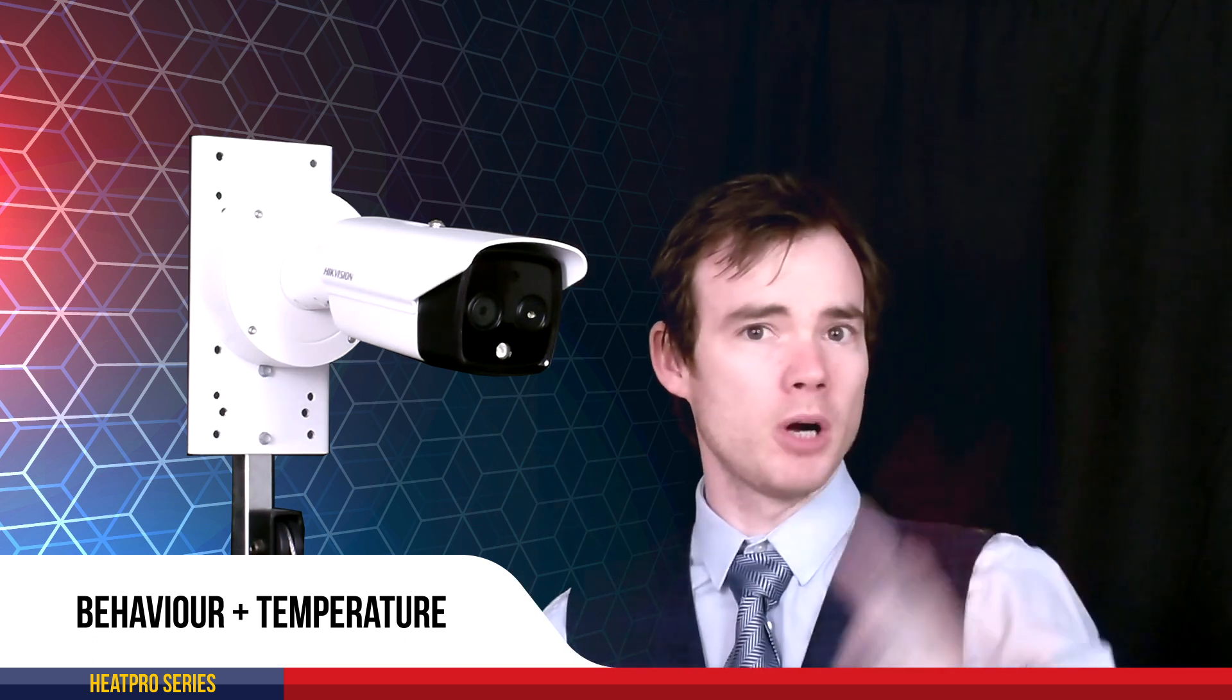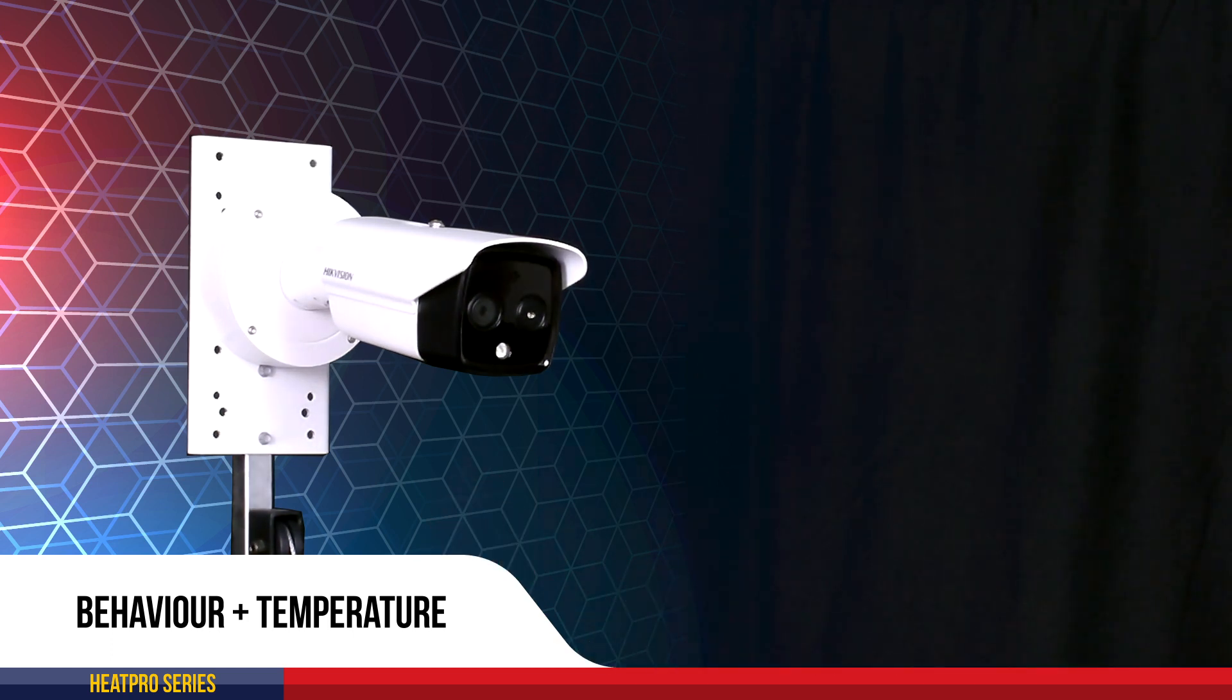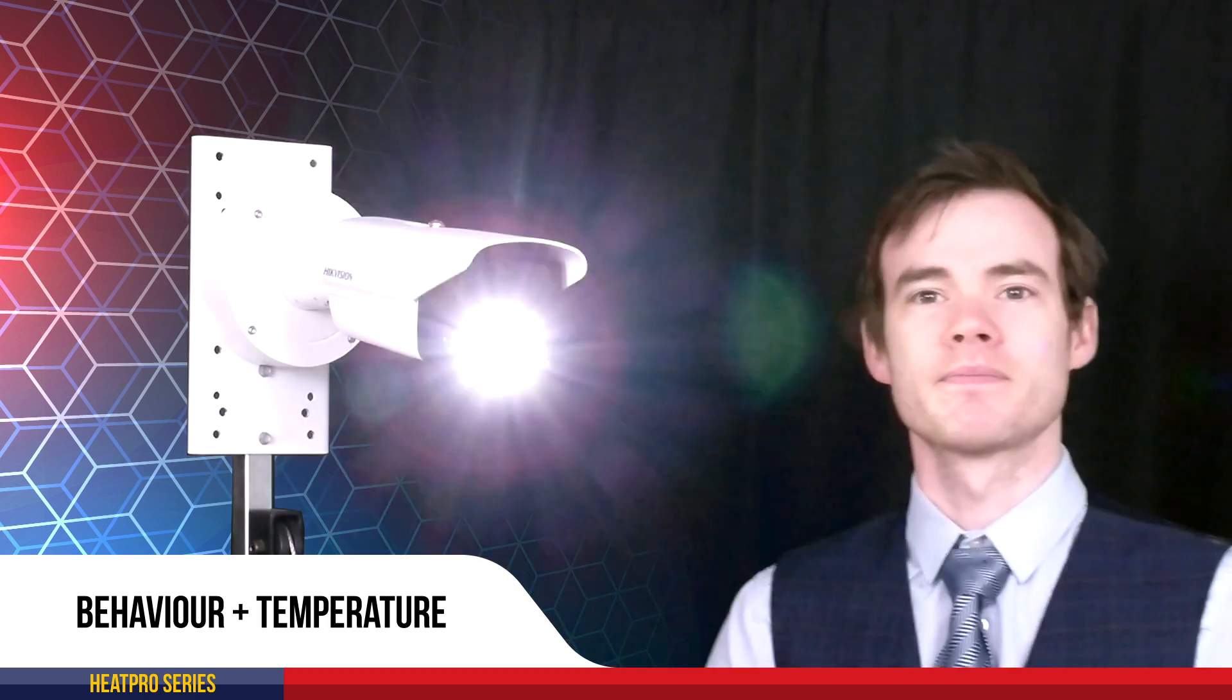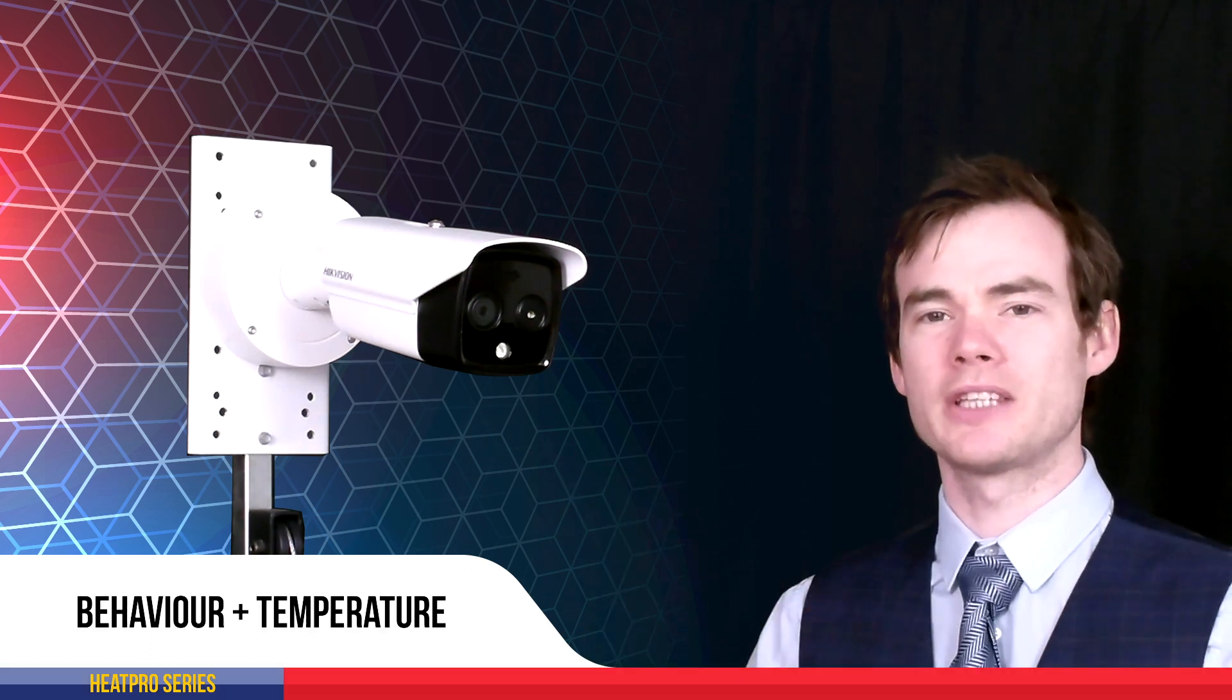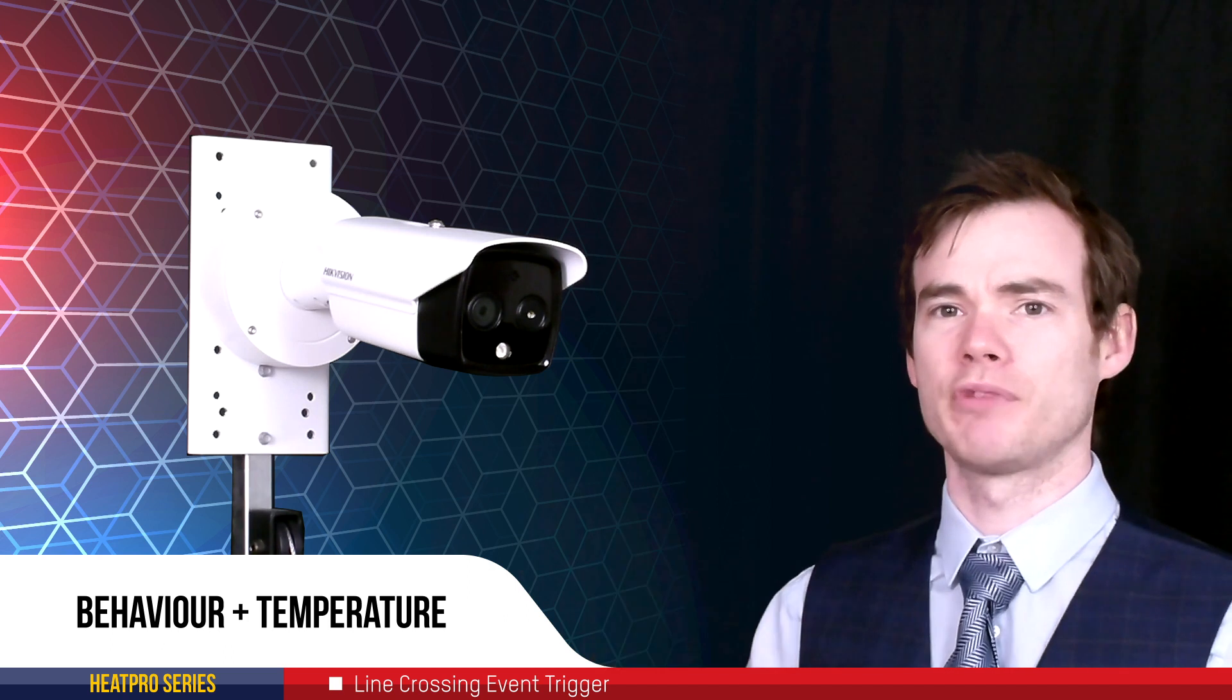Now I've got a line crossing currently set up over there at the moment. So I'm just going to walk into there, trigger that line crossing and we'll see what happens. Morning, this is a restricted area. So there we go, we've got the flashing white light on there and we've got the telling us it was restricted area from the camera itself.